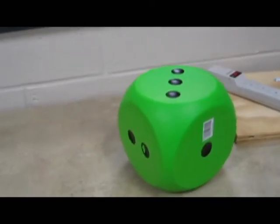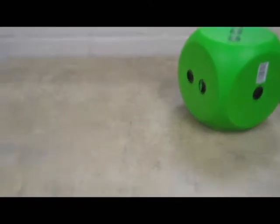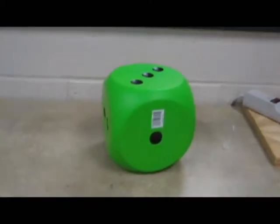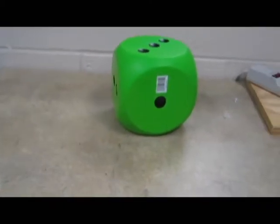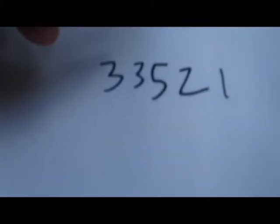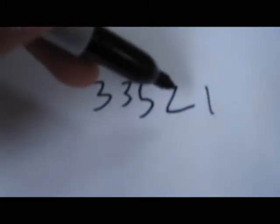So here I have three. I'm going to write that down right here. I'm going to roll again. I got a three again. This might be rigged. Might be a trick dice. But I roll it again. I rolled a five. And then I rolled a two. And I rolled a one. So my number is three, three, five, two, one.